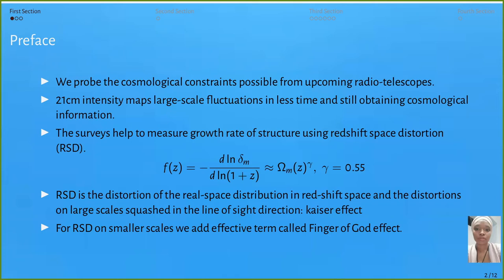On smaller scales, the fluctuations are stretching along the line of sight, which is along the redshift direction. This is called the Finger of God effect.